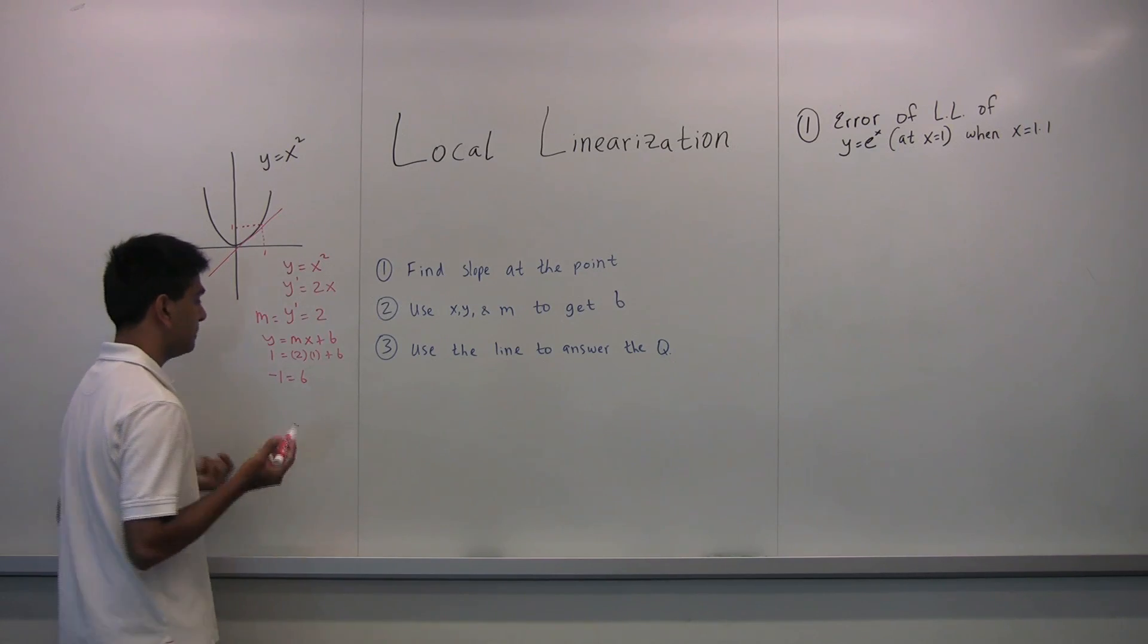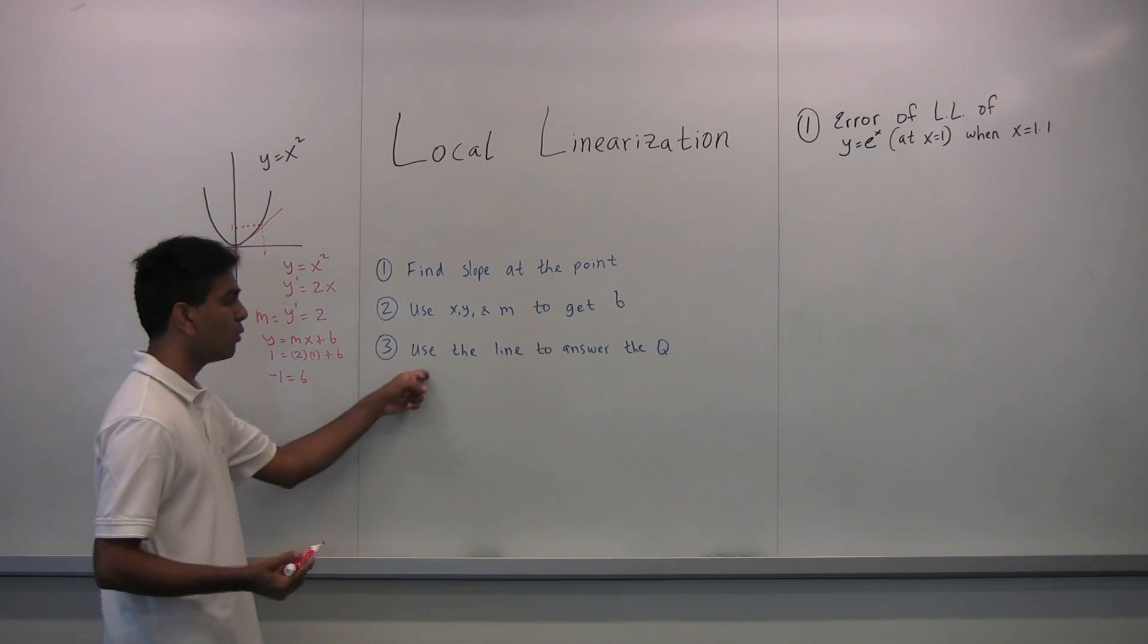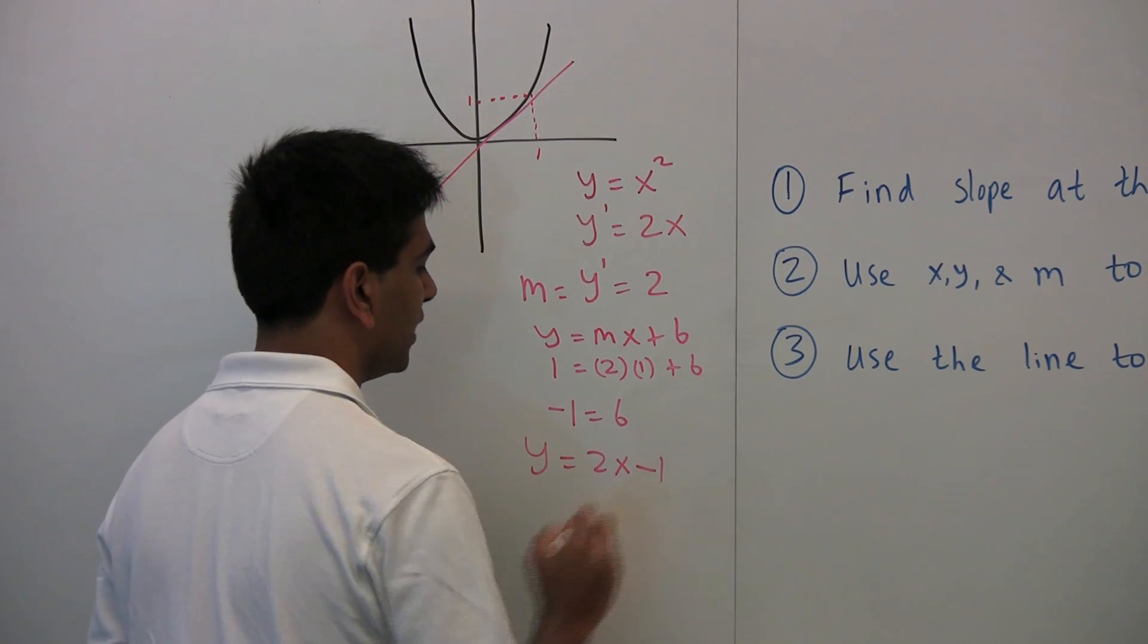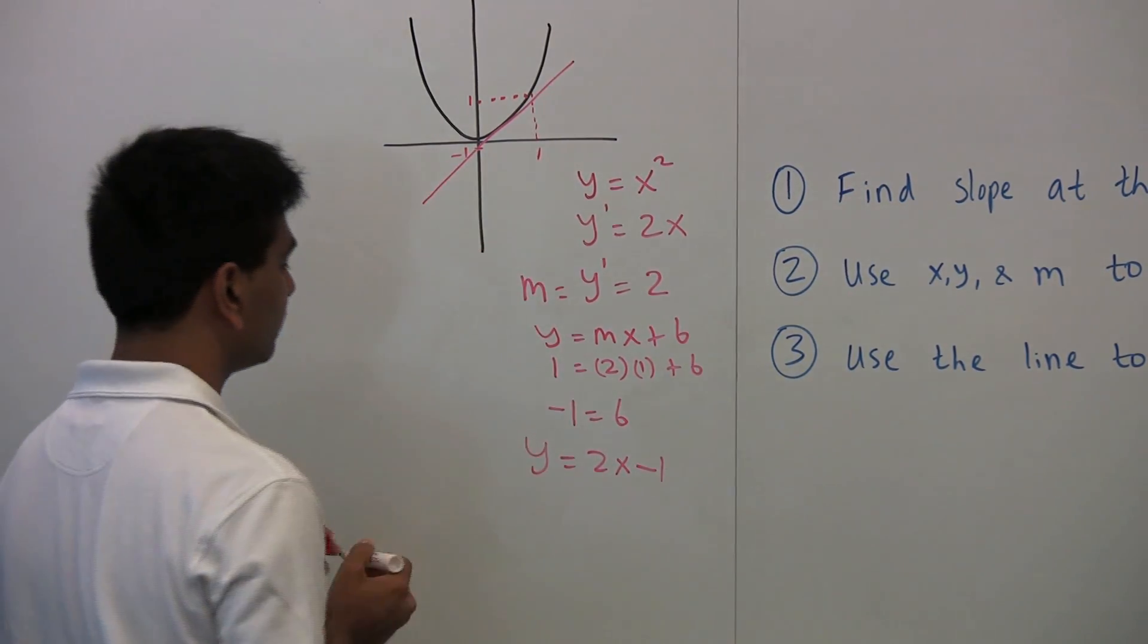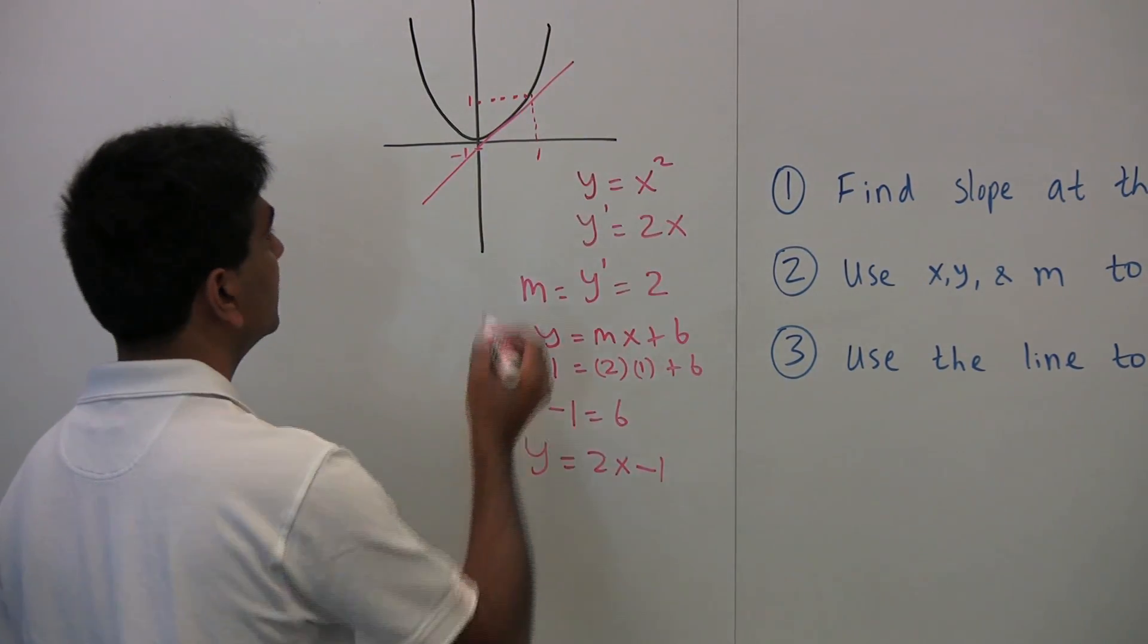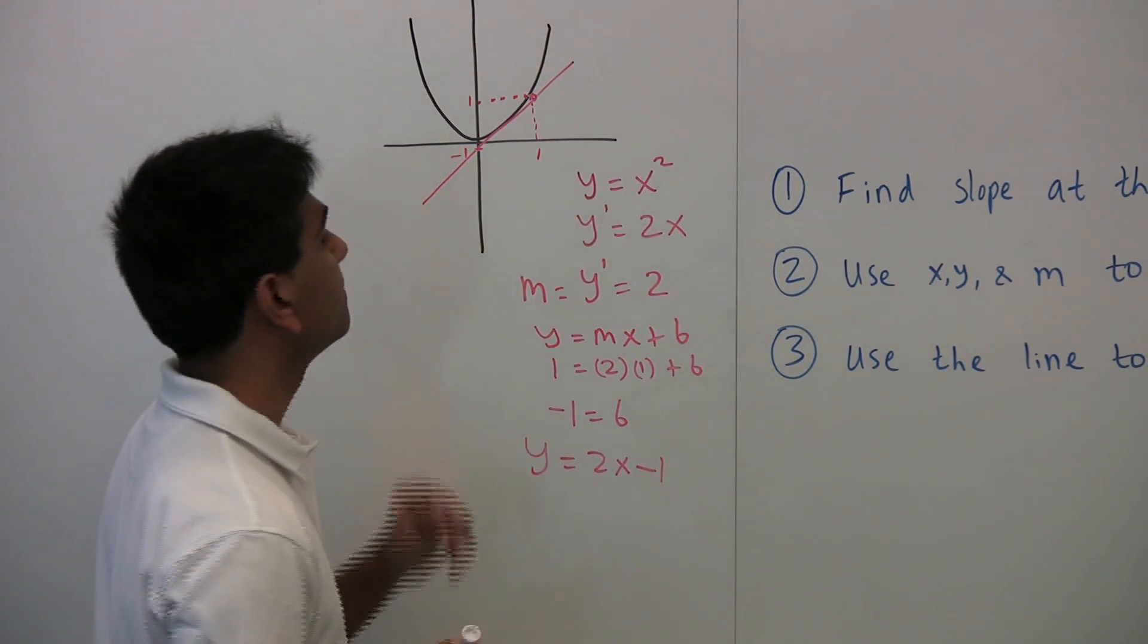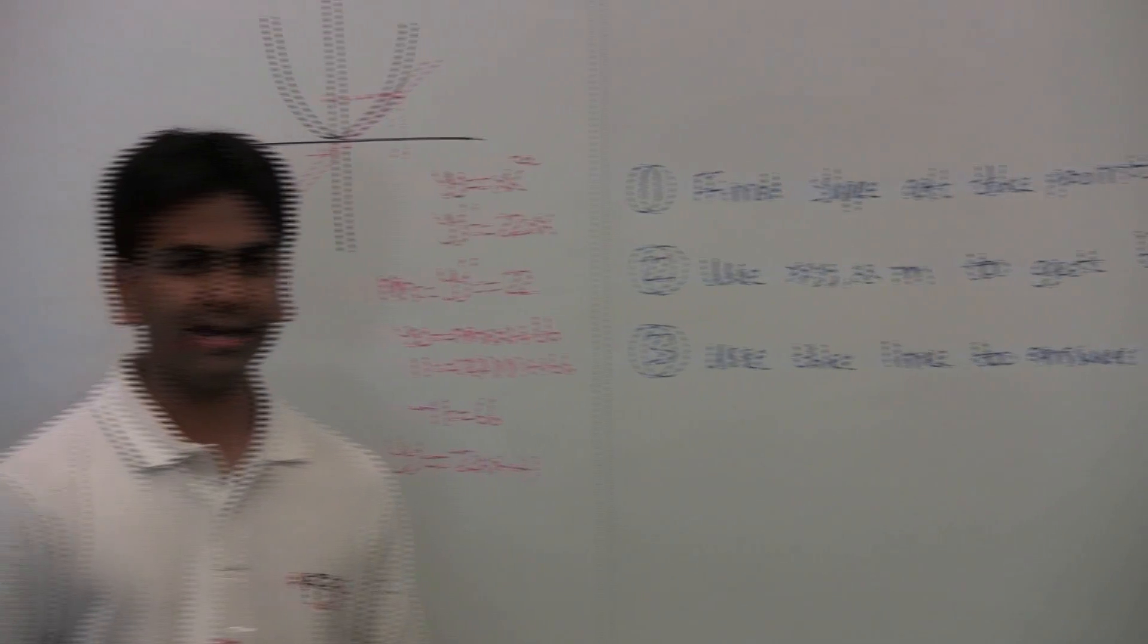So now we know that b is negative 1 and m is 2. We can use this to write out the equation y equals mx plus b. So y equals 2x minus 1. So the intercept here will be negative 1 and the slope of this line is 2, and that will estimate this function at x equals 1. Now we can use this line to answer any question that we have. Let's take a look at an example.